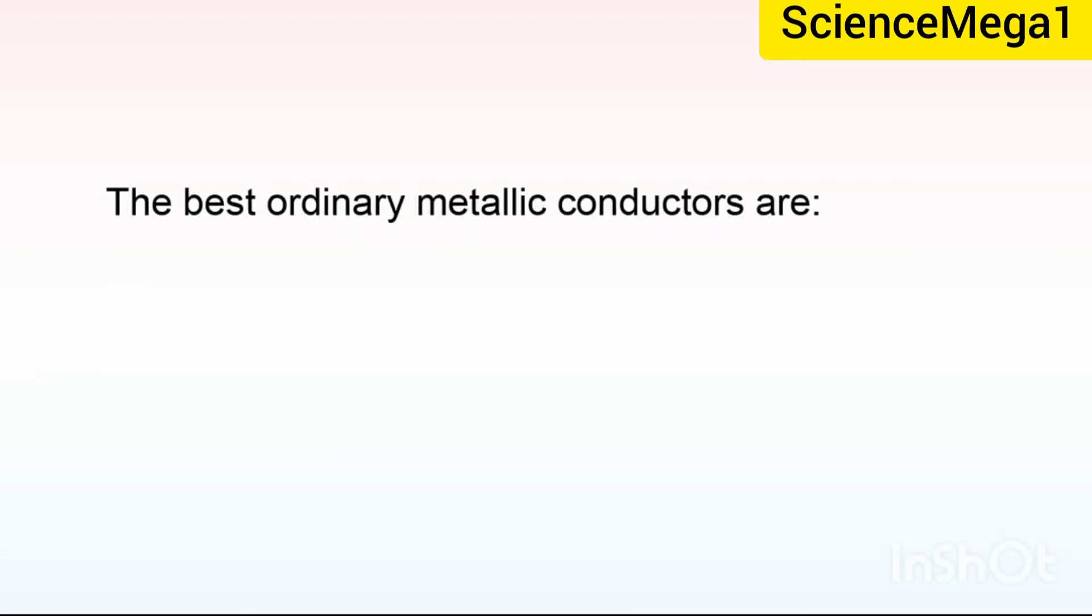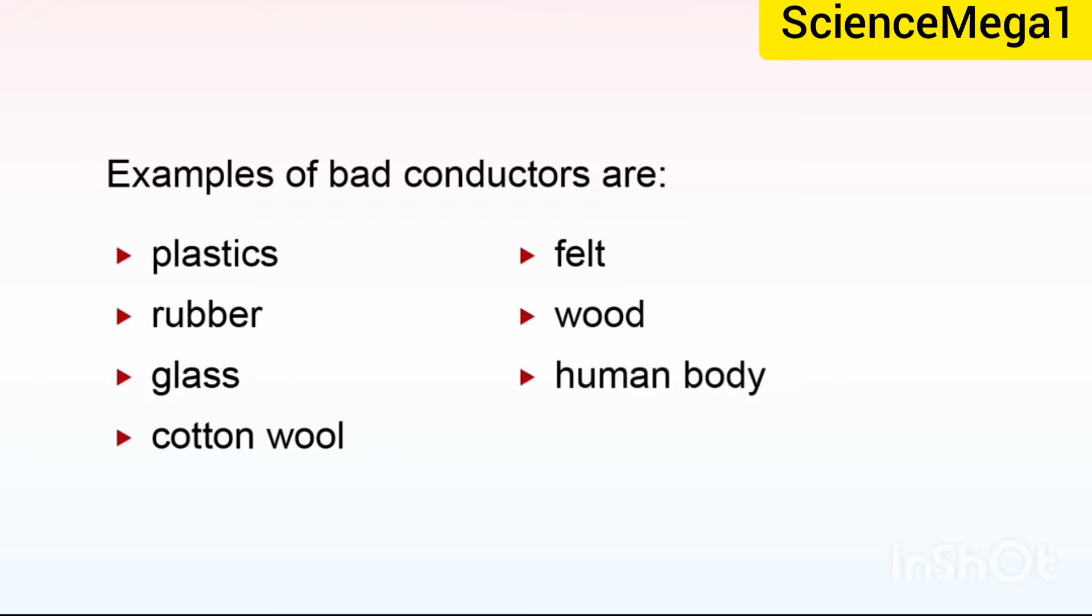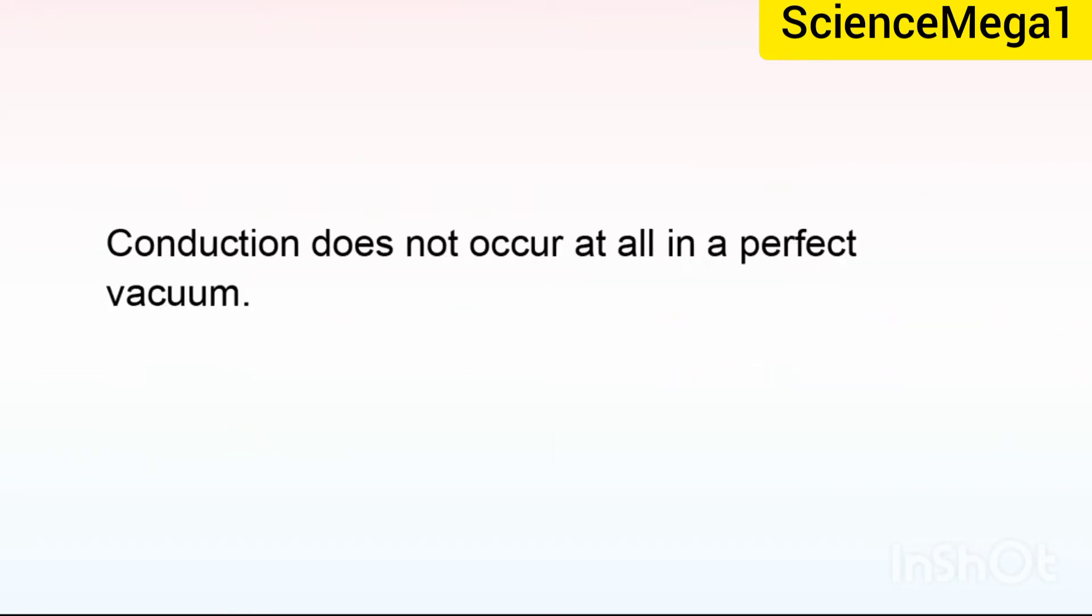The best ordinary metallic conductors are silver, copper, gold, aluminum, beryllium, and tungsten. Examples of bad conductors are plastics, rubber, glass, cotton wool, felt, wood, the human body, etc. Conduction does not occur at all in a perfect vacuum. Bad conductors of heat are also called insulators.